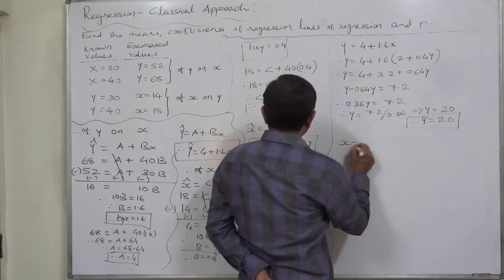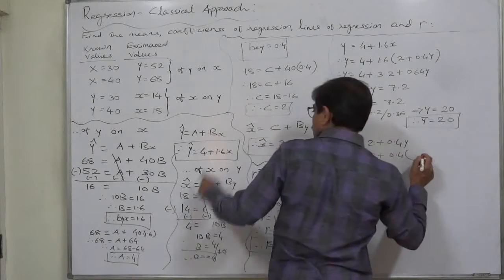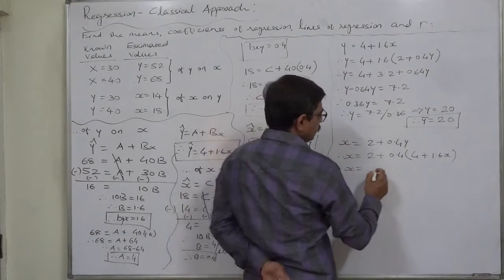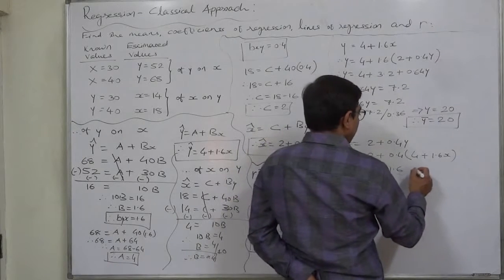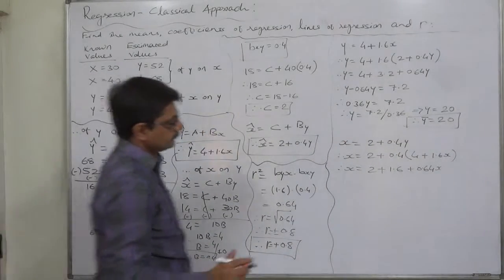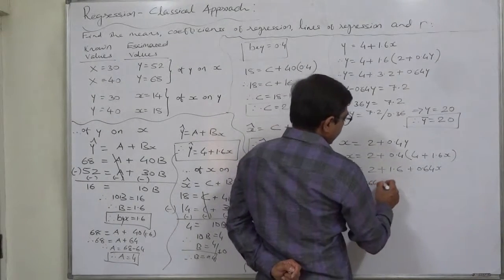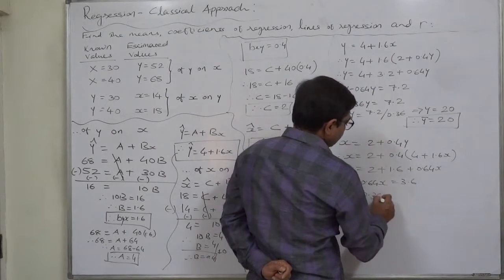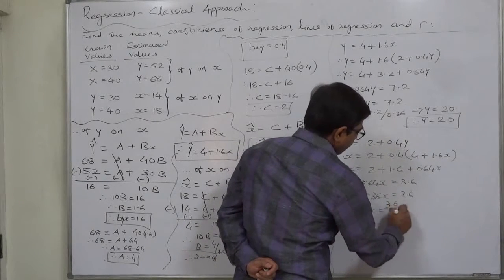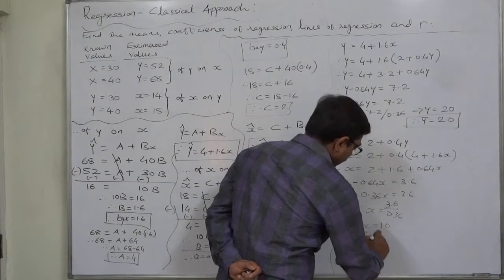Similarly, substituting the equation of y into the equation of x, we get x equals 2 plus 0.4 times (4 plus 1.6x), which simplifies to 0.36x equals 3.6, therefore x equals 3.6 divided by 0.36, which equals 10. At this stage, x is x-bar, so x-bar equals 10.